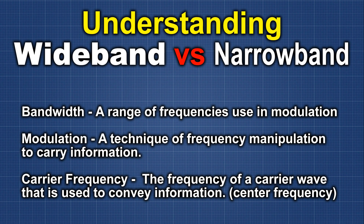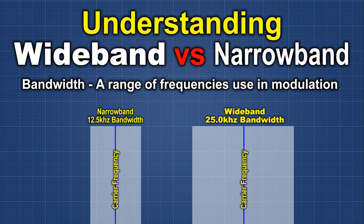Now that we have a broad definition of bandwidth and a general understanding of modulation and carrier frequency, we can discuss the difference between narrow and wide. It really is just as simple as the difference between the deviation — both in the positive and the negative — from the carrier frequency that determines the amount of bandwidth. Wideband will deviate further in both directions from the carrier frequency; narrowband will do it less.